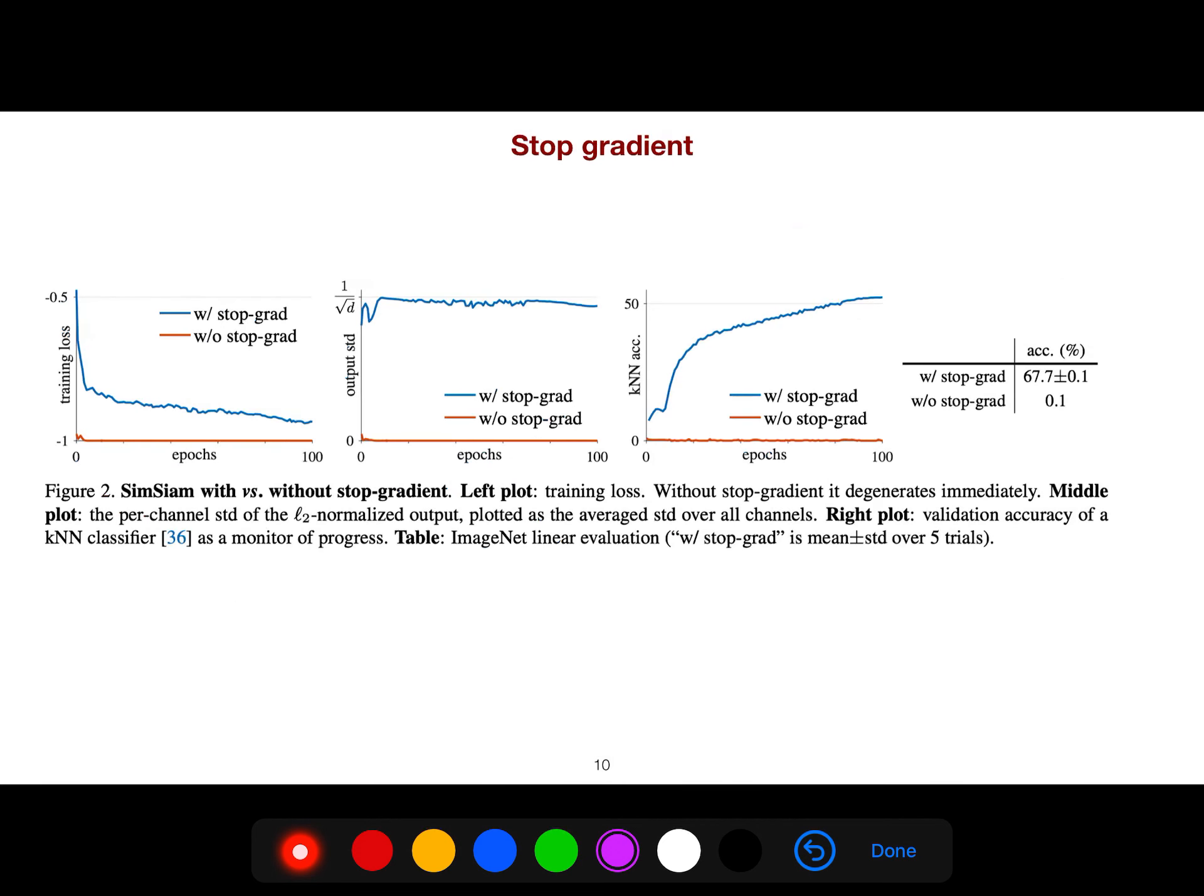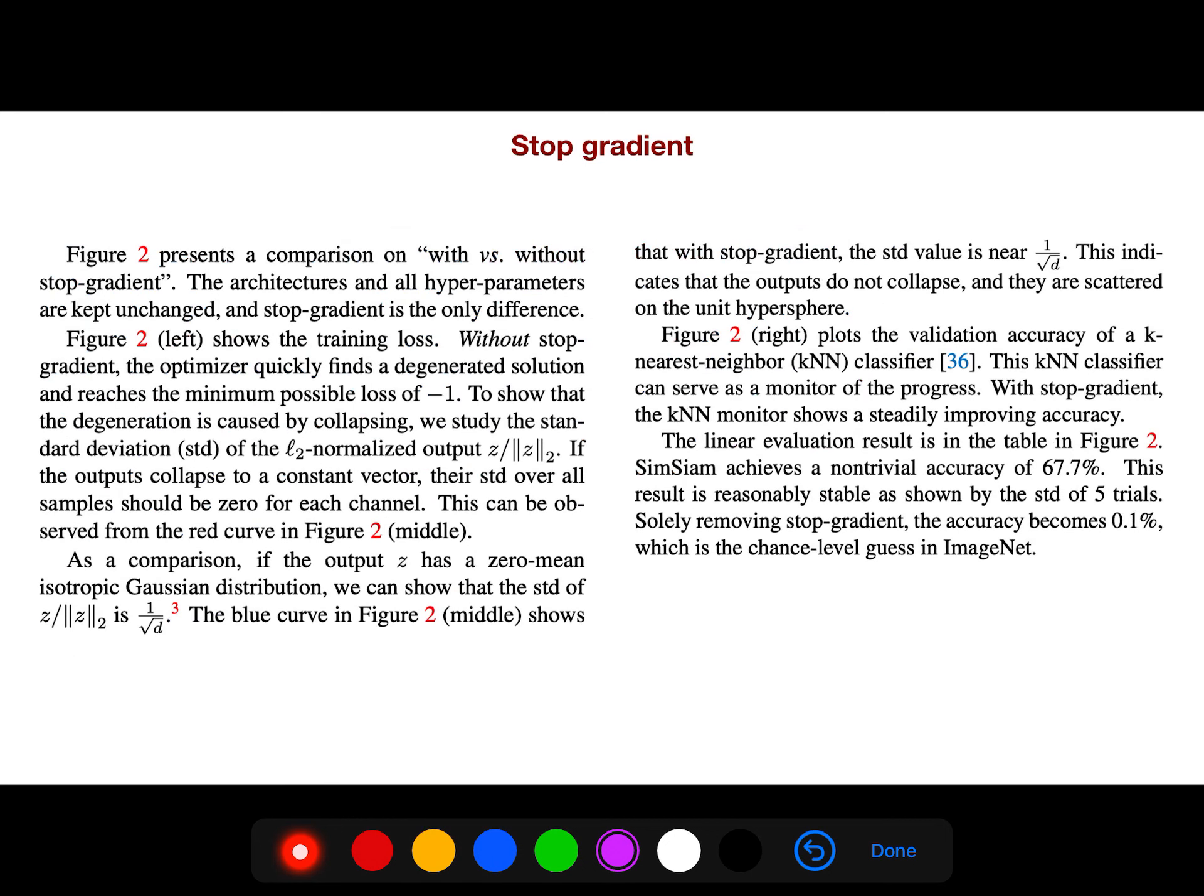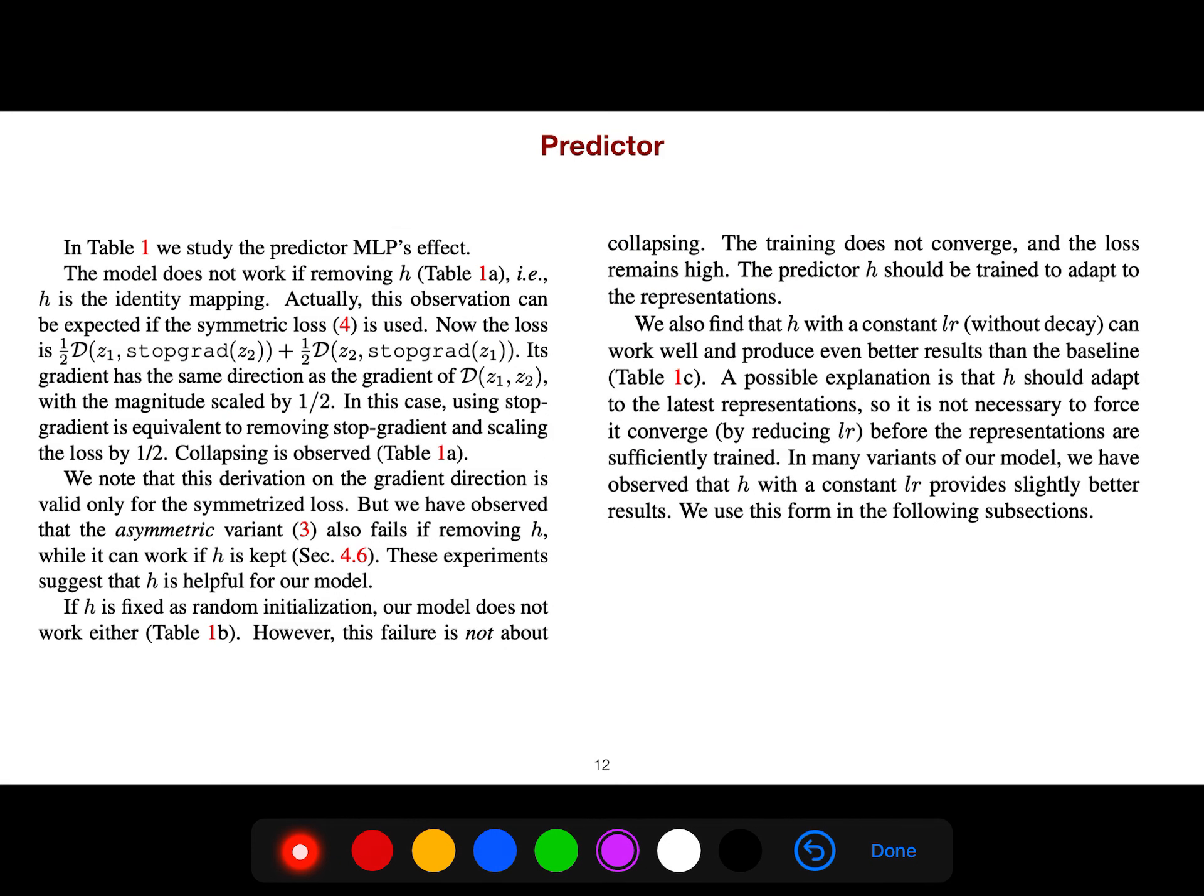You see that for SimSiam, we can compare it with stop-gradient. The model does not work if removing h; if h is the identity mapping. Actually, this observation can be expected if the symmetric loss is used. The gradient has the same direction as the gradient of D. This derivation on the gradient direction is valid only for symmetrized loss, but we have observed that the asymmetric variant also fails if removing h.